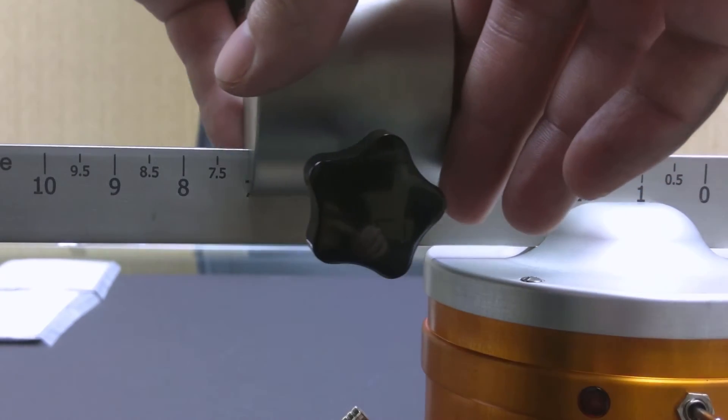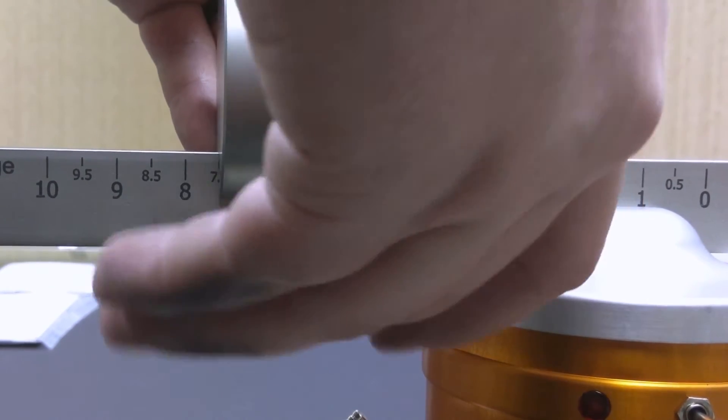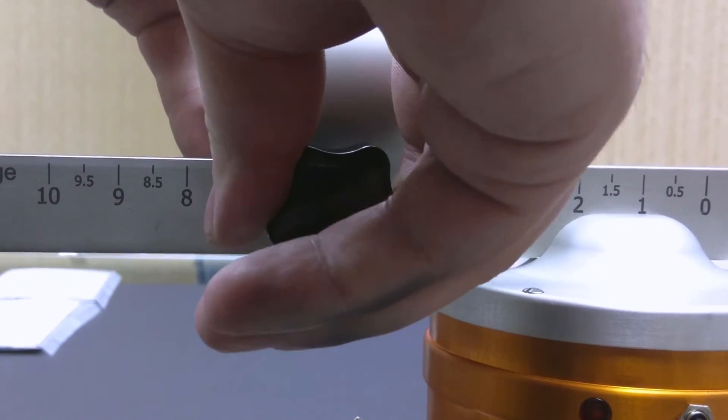Using the adjustable weight at the top of the tester, we can set the weight for which the test is to be performed, on a scale from 0 to 10 newtons.